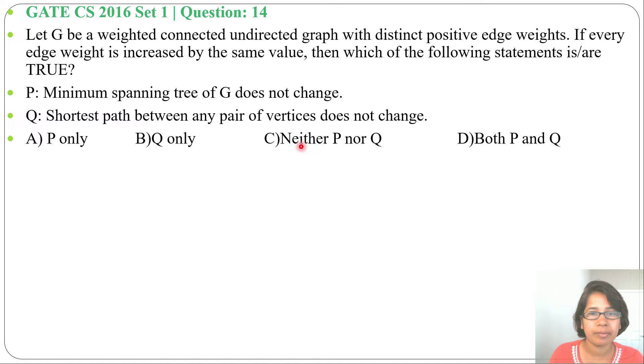Let's go one by one. Statement P: Minimum spanning tree of G doesn't change. Let's take an example. Now this is a graph, here weights are 10, 10, and 25. In the minimum spanning tree, weights will be 10 and 10, so the minimum spanning tree cost is 20.